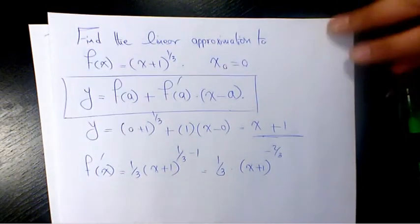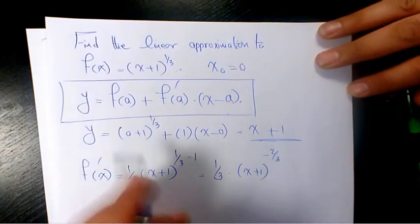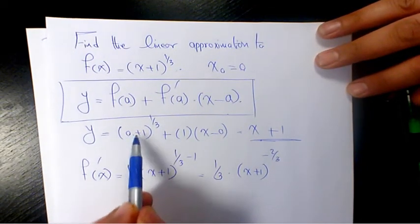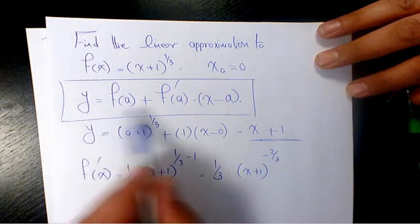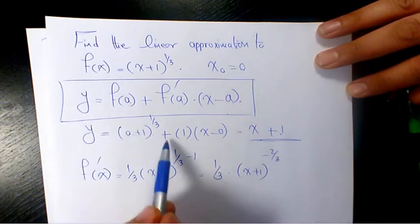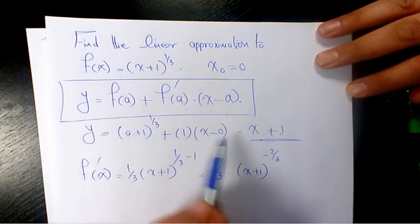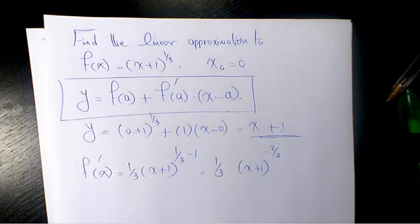This is going to be the approximation for this function, because 0+1 is 1, and 1 to the power of 1/3 is just 1, plus the derivative term times x.